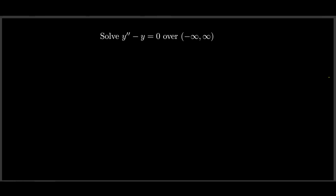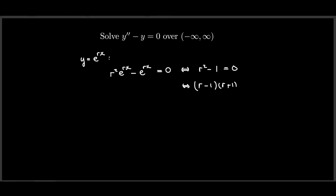Let's try and solve this equation. From our technique, we try y = e^(rx). Substituting gives r²·e^(rx) − e^(rx) = 0, which is the same as r² − 1 = 0. Factoring gives (r − 1)(r + 1) = 0, so we have two potential values: r = 1 or r = −1.